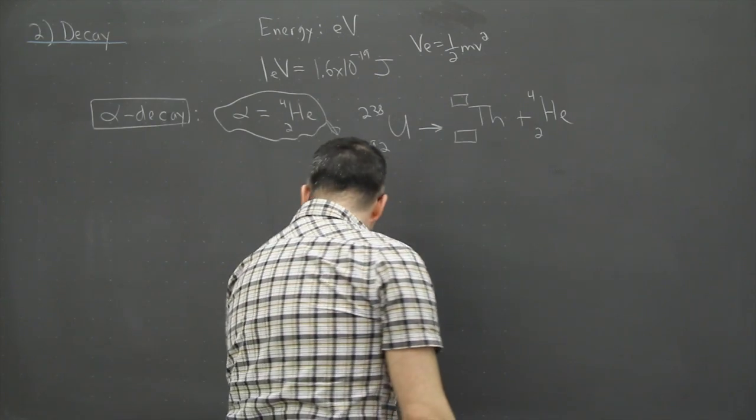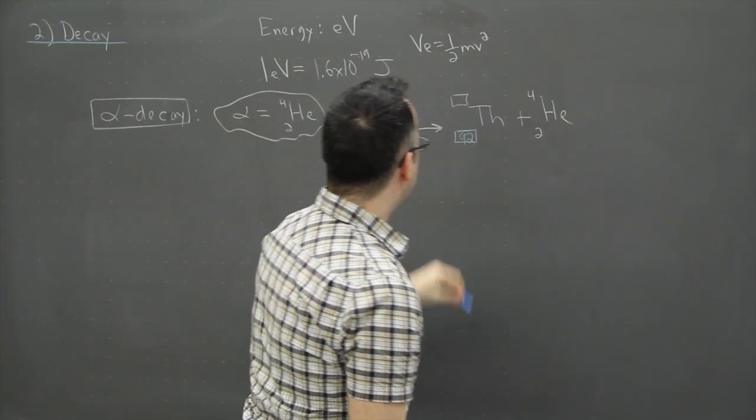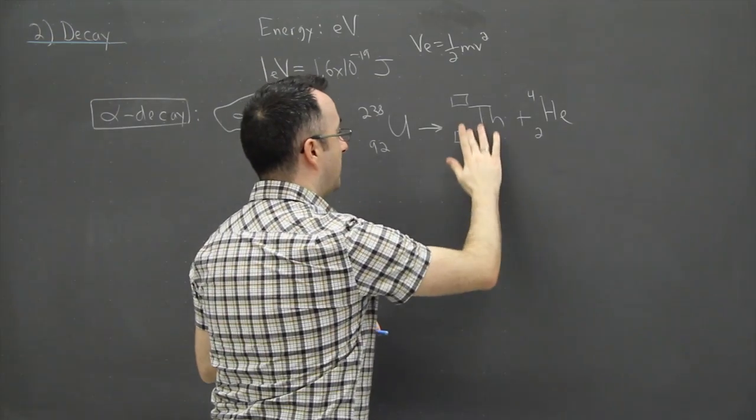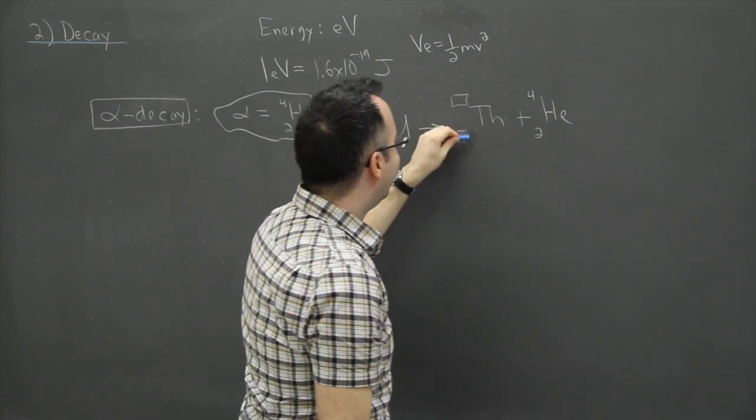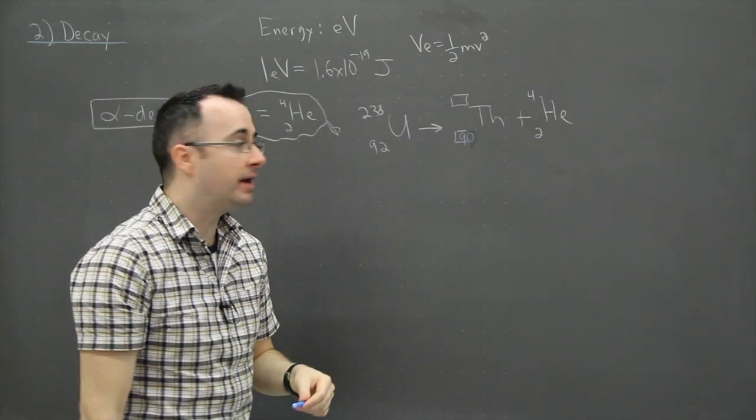That's it. So then basically I would say, all right, well, since I can add and subtract, this is 90, whoops, apparently I can't. This would be a 90 that would go here. So thorium must be element number 90.